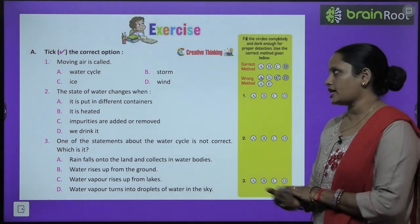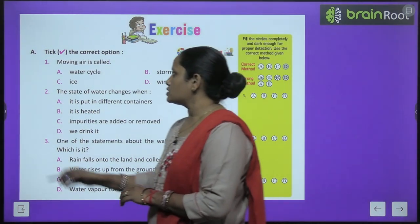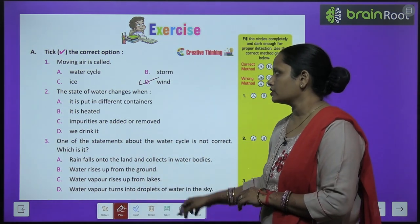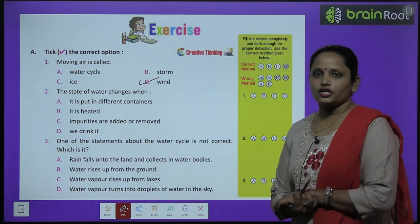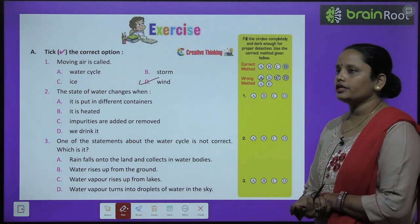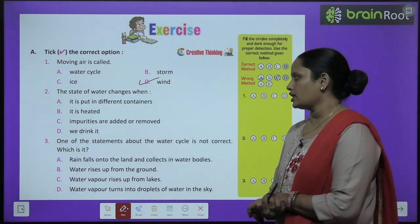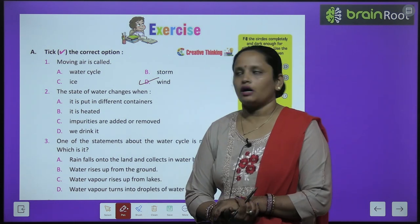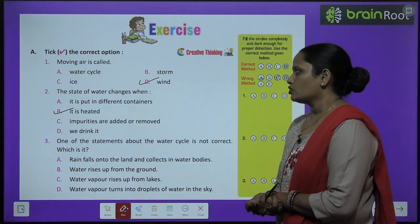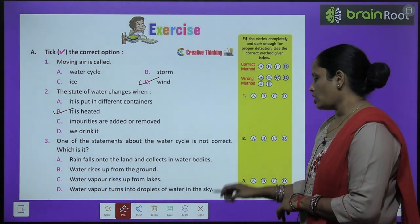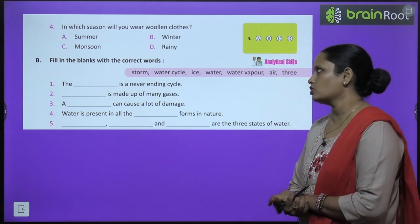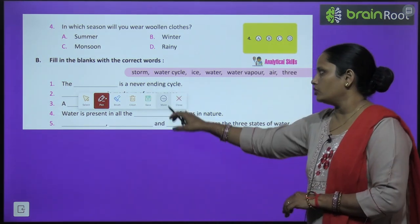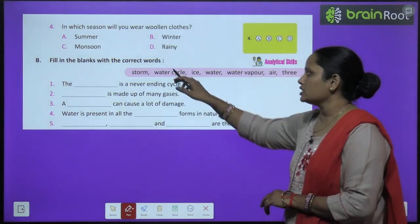Now let's move on to book exercises. Exercise A: choose the correct option. Moving air is called wind. The state of water changes when it is heated. Exercise B: fill in the blanks. The blank is the never-ending cycle — water cycle. Air is made up of many gases. A storm can cause a lot of damage. Do questions 4 and 5 yourself.